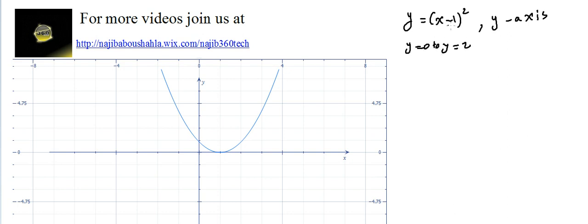When we draw y equal (x minus 1) to the power 2, it will be this curve. We need it from y equal 0 to y equal 2, so we have a horizontal line over here.